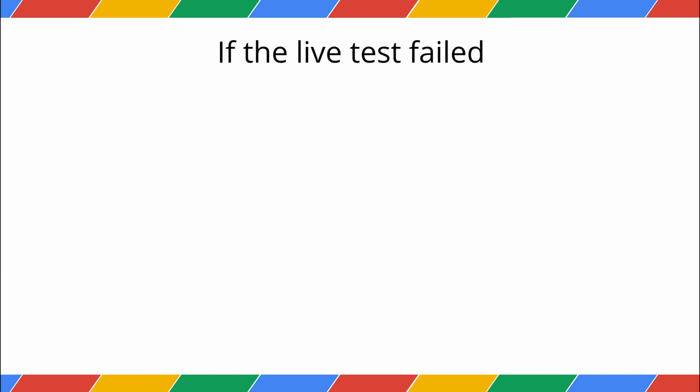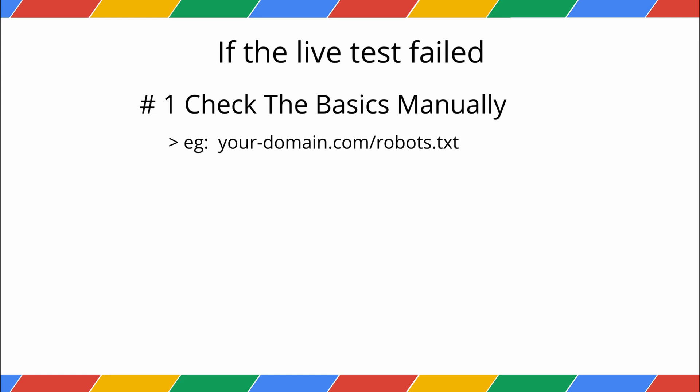If the live test failed, check the easy stuff first. Make sure your robots.txt file is in the root directory of your website. You should be able to see it by going to yourdomain.com/robots.txt in your browser. Next, caching could be the issue. Go into your website's dashboard and clear all caches. If you use a caching plugin on a site like WordPress, clear its cache. If you use a CDN like Cloudflare, purge its cache too. Then run the live test again.